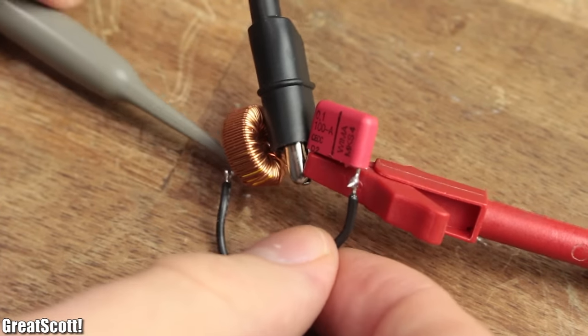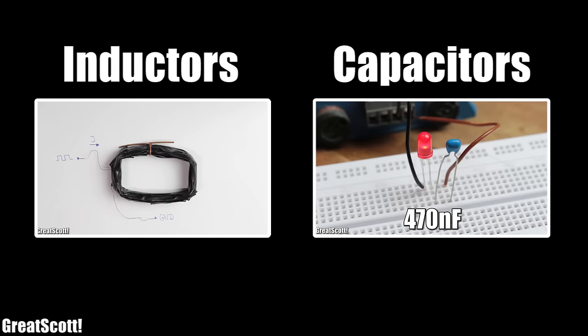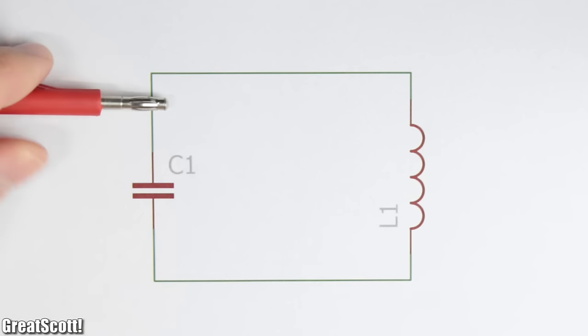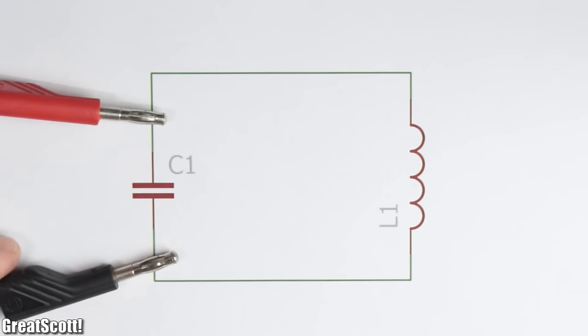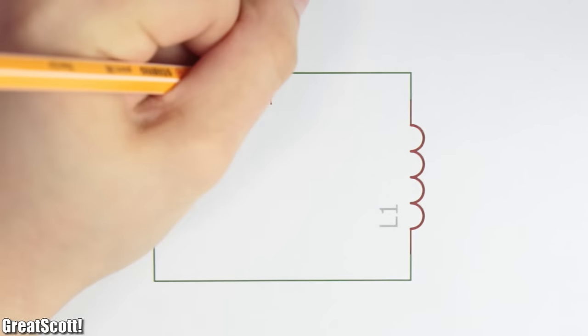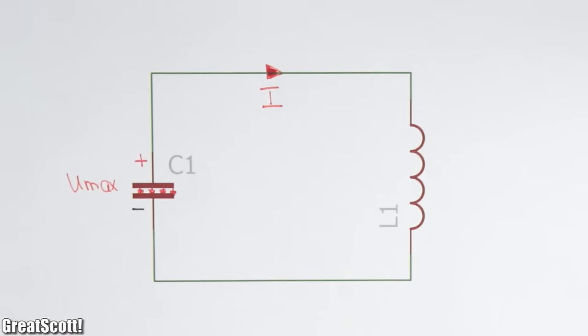But before going into detail about those, I recommend that you should watch my videos about capacitors and inductors. Firstly, the capacitor gets charged up to the maximum voltage and has its maximum electrostatic energy stored. After disconnecting the power supply, the capacitor slowly discharges through the inductor.